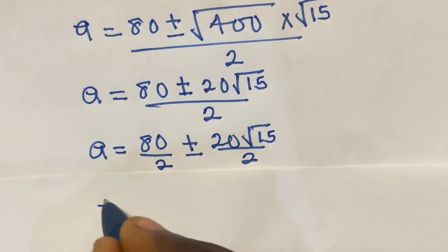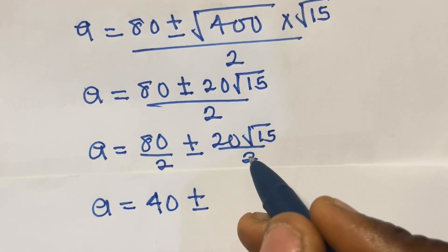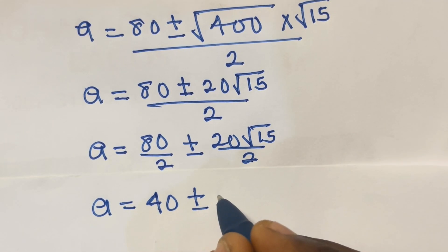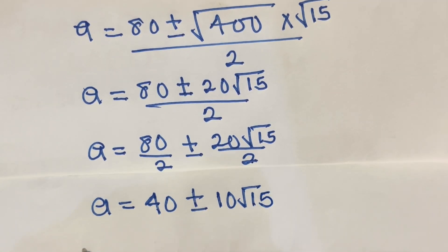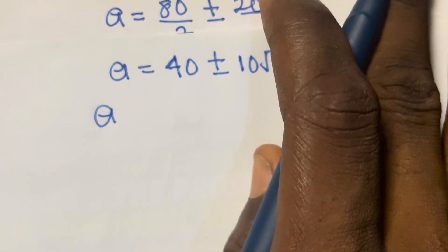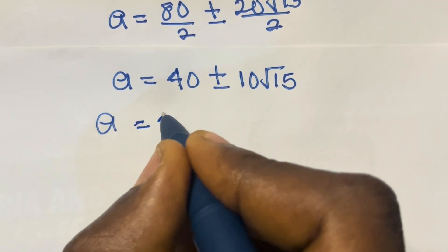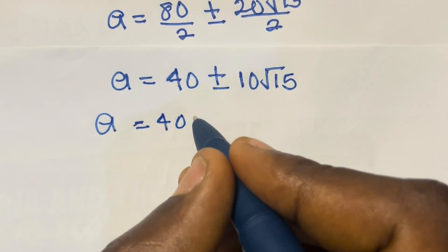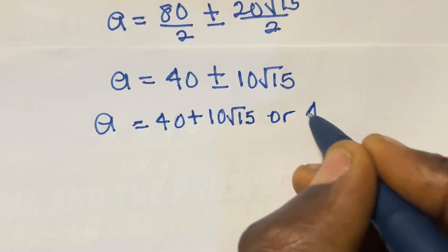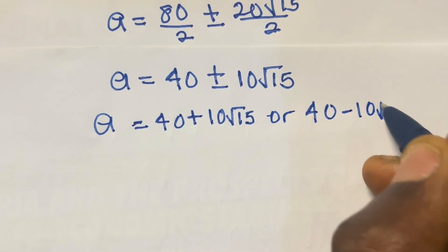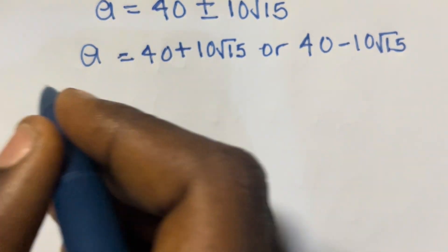Therefore a equals (80 ± 20√15) divided by 2, which simplifies to a equals 40 plus or minus 10√15. So a equals 40 plus 10√15, or a equals 40 minus 10√15.